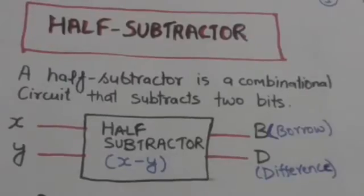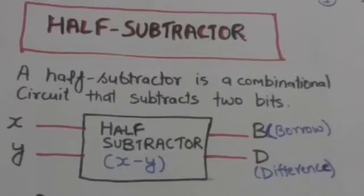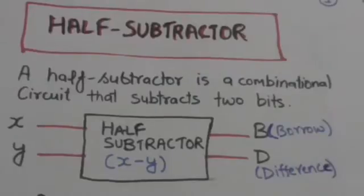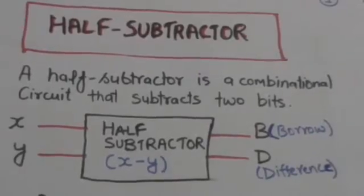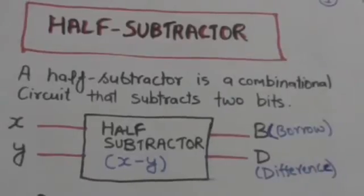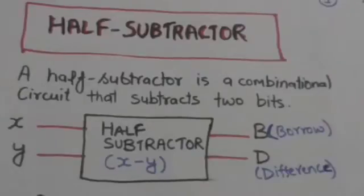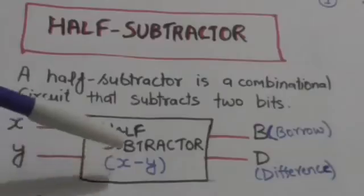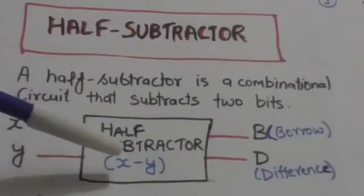Welcome back. In this tutorial we will study about half subtractor. A half subtractor is a combinational circuit that subtracts two bits. It has two input variables and two output variables. Input variables denoted by X and Y represent the bits to be subtracted. The half subtractor will subtract the bit represented by Y from the bit represented by X.